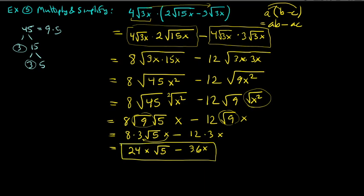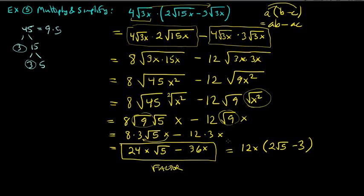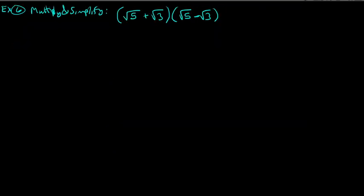You could also factor out the GCF, which is 12x, to get 12x times (2 square root of 5 minus 3). Personally, I would accept either form — the factored or the expanded version.